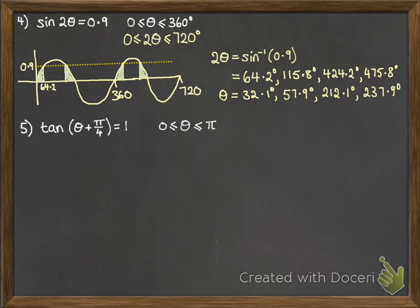We've got tan of (θ + π/4) equals 1. So we need to adjust the range that we're actually going to consider and add π/4 to each of the ends. So it's going to run between π/4 and π plus π/4, which is, of course, 5π/4. So θ plus π/4 is going to be the inverse tan of 1, which is π/4 by reading off of our table of values we had on the first slide.